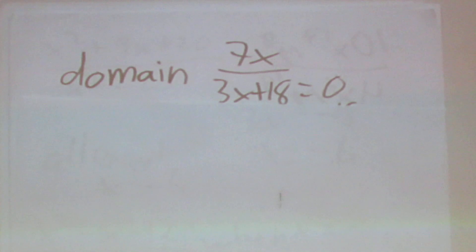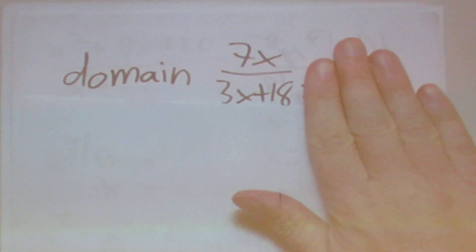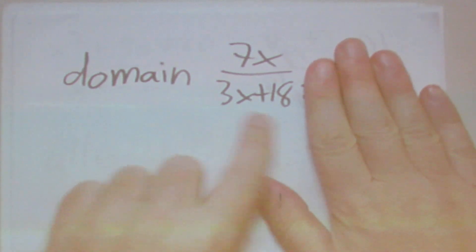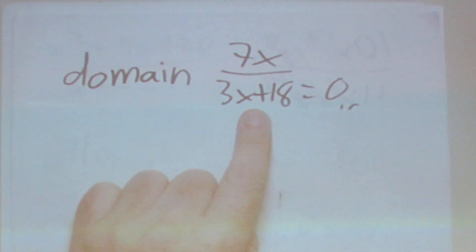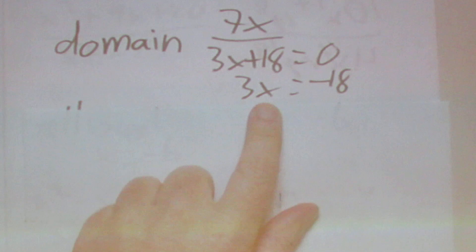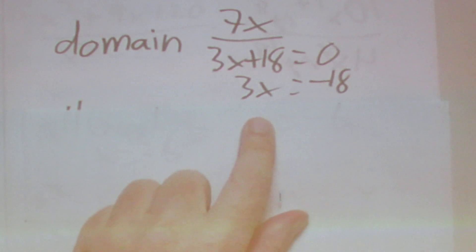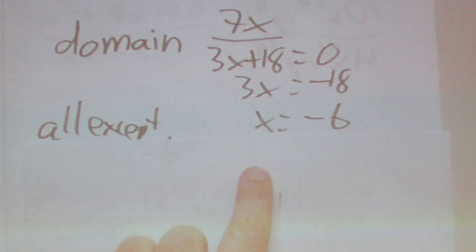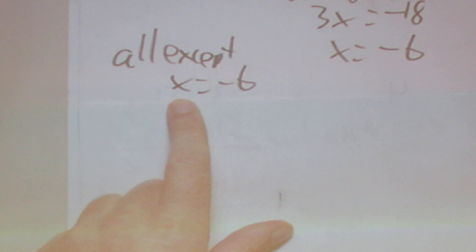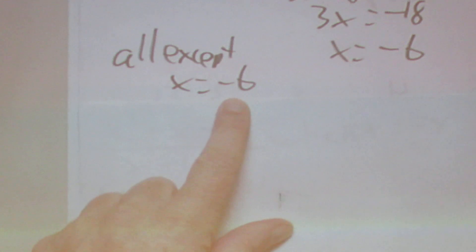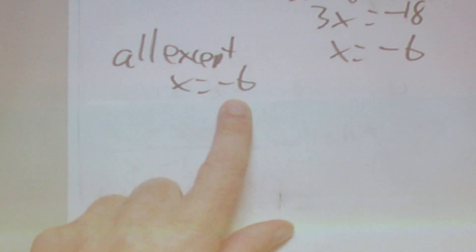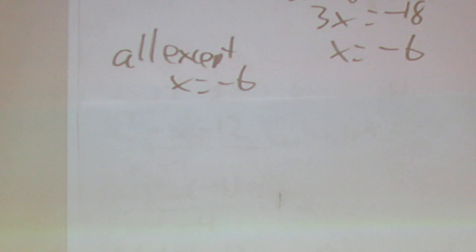The first question is going to be like in the homework, where it gives you a rational expression — say 7x over 3x plus 8 — and you just want to find the domain. So what you're going to do is set the denominator to 0 and solve for x. We subtract 8 from both sides and get 3x equals negative 8, then divide by 3 to get negative 6. The answer is all real numbers except x equals negative 6, because that's the only value that makes the denominator 0.